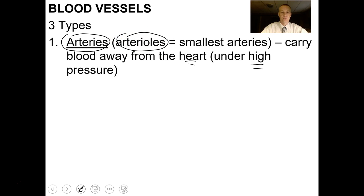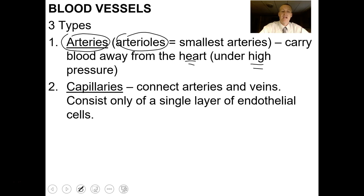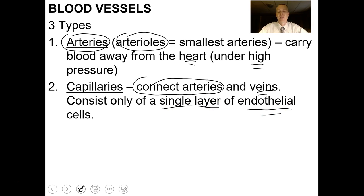We don't have very many arteries compared to capillaries. The main job of capillaries is to connect arteries with veins. They consist of only a single layer of epithelial cells called endothelial cells, and their main job is nutrient and gas exchange. Capillaries being only one cell layer thick allow gases like carbon dioxide and oxygen and nutrients to travel through them very easily.